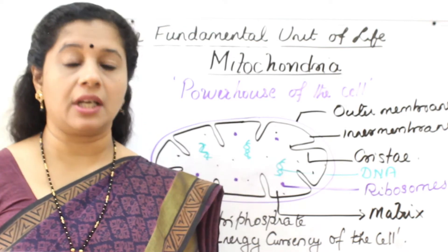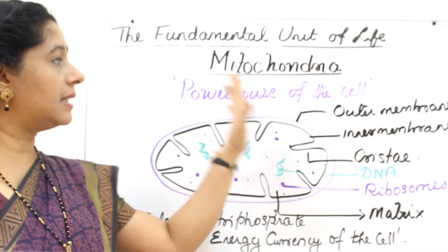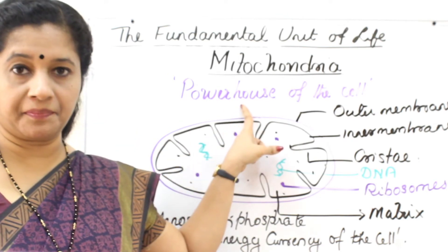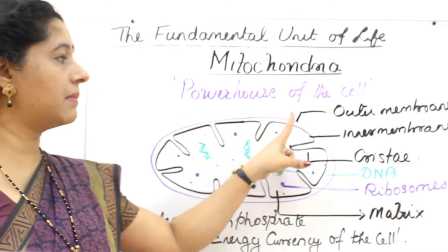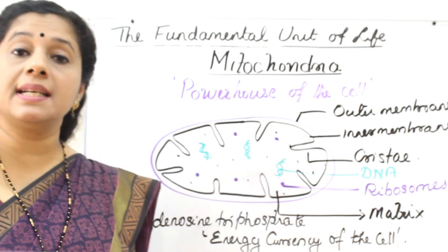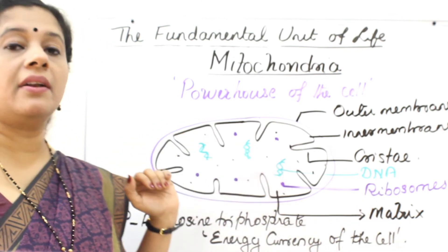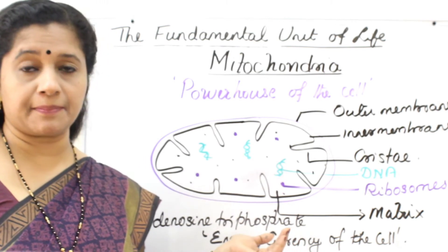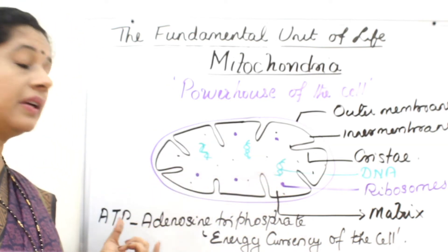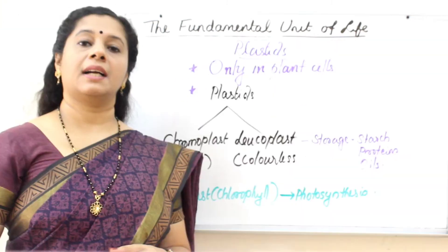When I am talking to you right now, I need energy, so I am breaking down ATP in my body to get that energy. That is why it is called the energy currency of the cell. To summarize mitochondria: it is known as the powerhouse of the cell. The outer membrane is porous and the inner membrane is folded, increasing surface area. Inside is a fluid called the matrix, and it has its own ribosomes and DNA — hence called a strange organelle. Respiration takes place inside the mitochondria, releasing energy as ATP, also called adenosine triphosphate.